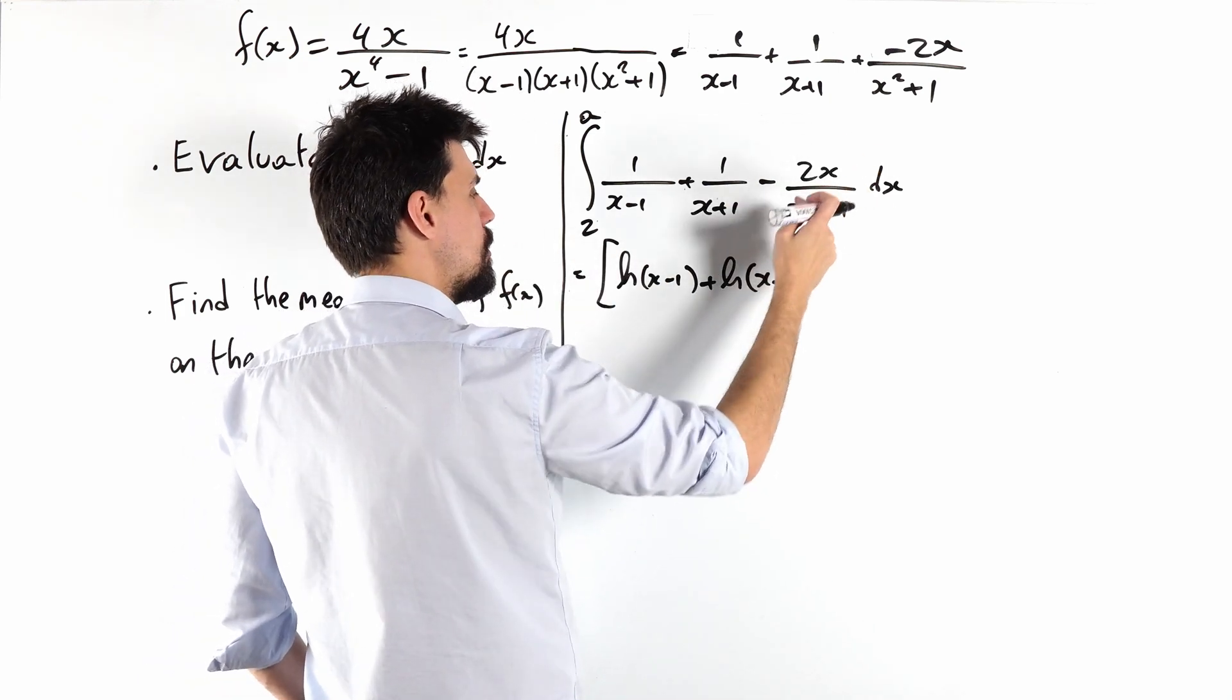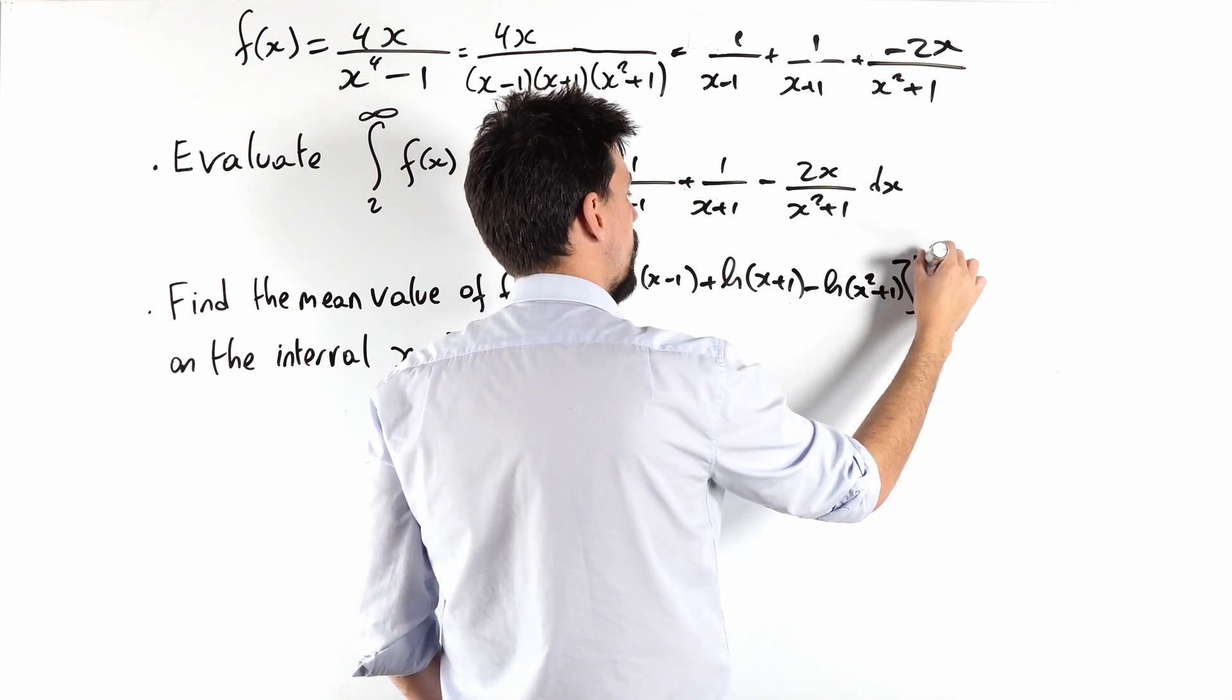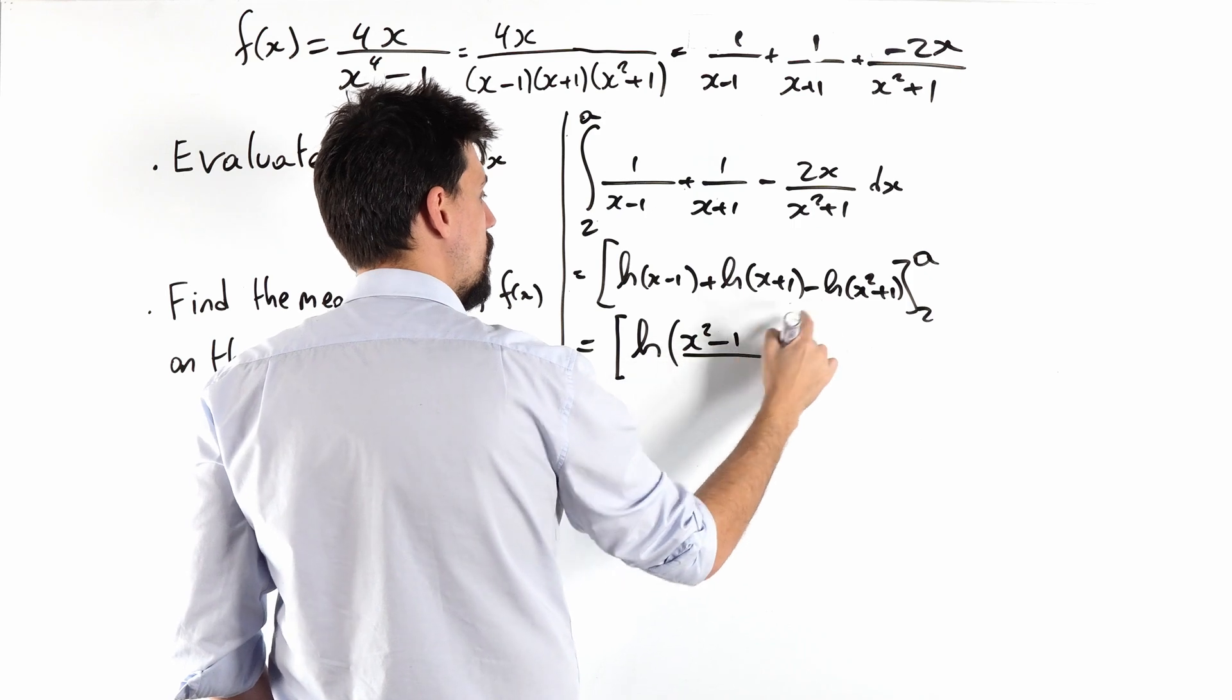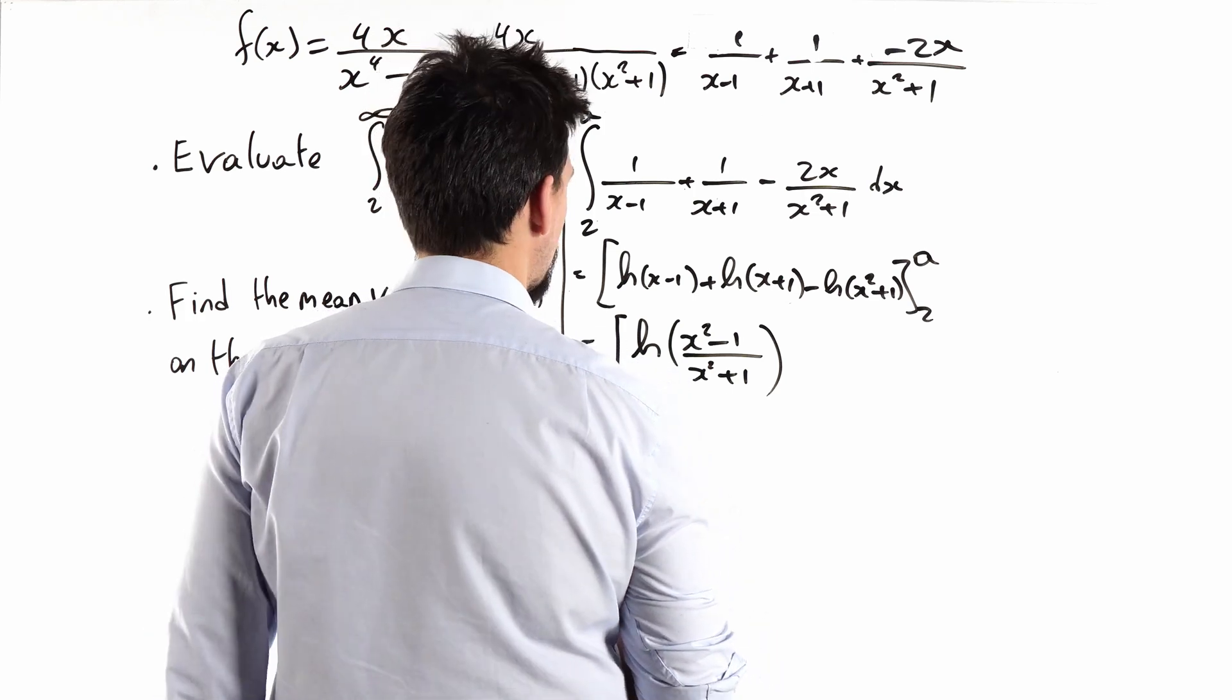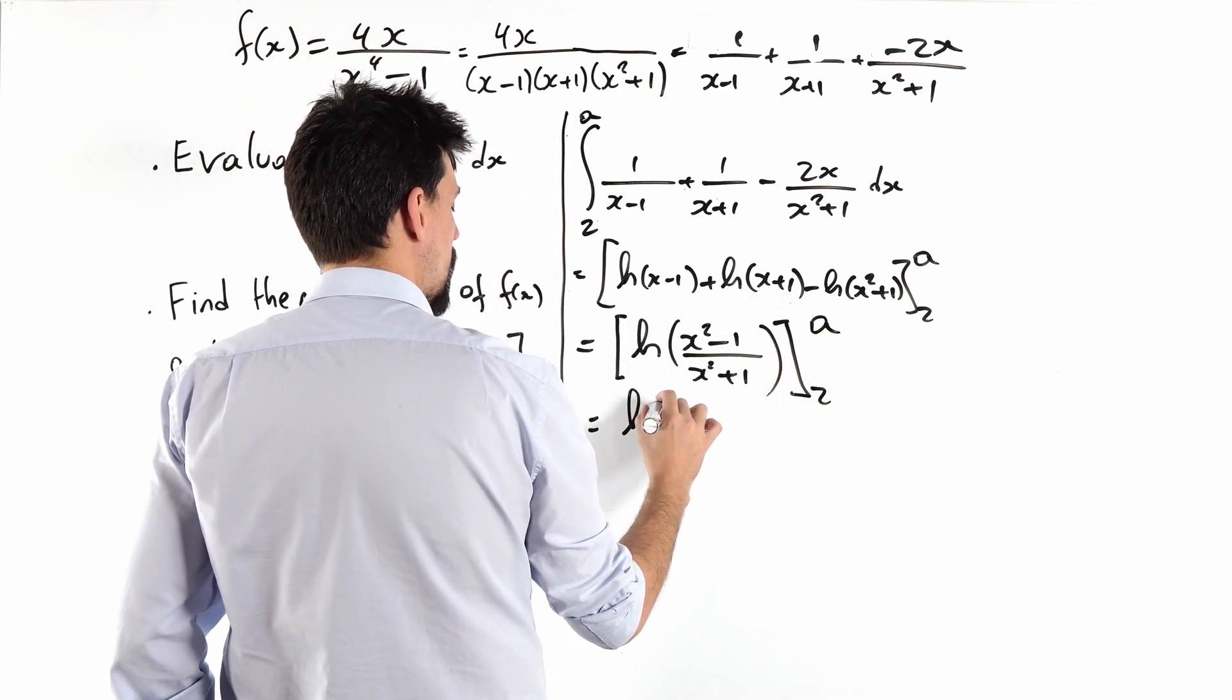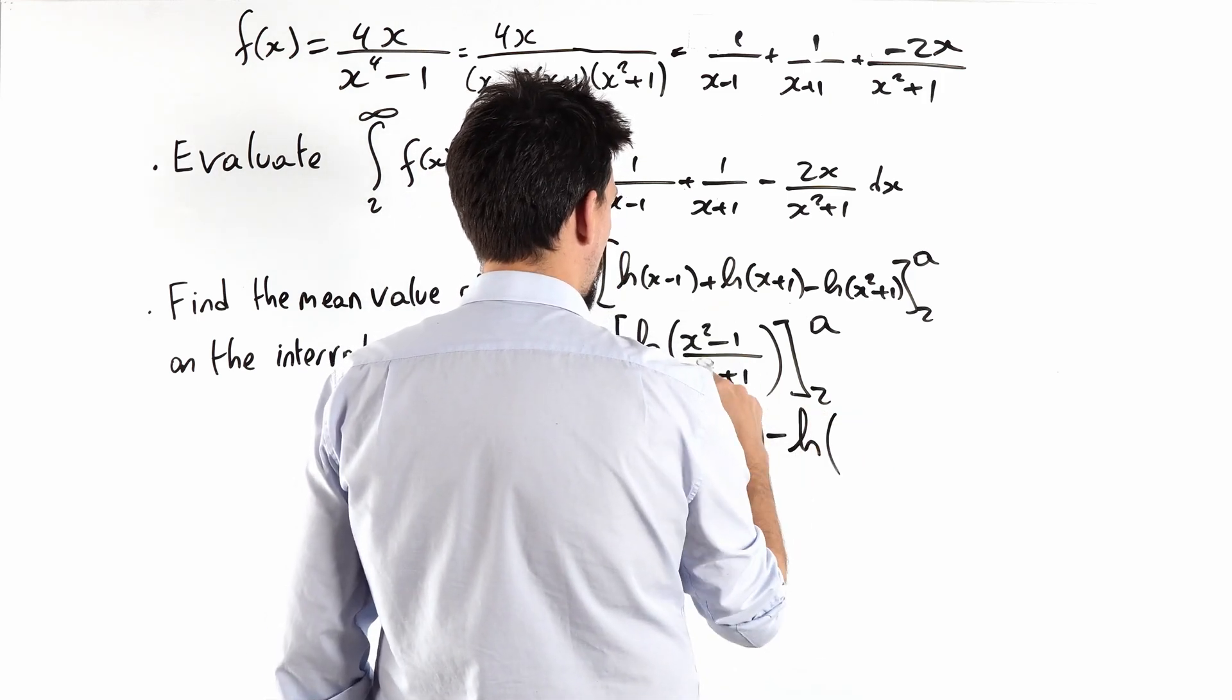And beautifully, I've got 2x on top, x squared plus 1 in the denominator. That is the derivative of that, so I can call that ln of x squared plus 1. And quite gloriously, this comes out as ln of that times that, which is x squared minus 1 over x squared plus 1. Isn't that beautiful? Between 2 and a, so that will give me ln a squared minus 1 over a squared plus 1 minus ln of 3 over 5.